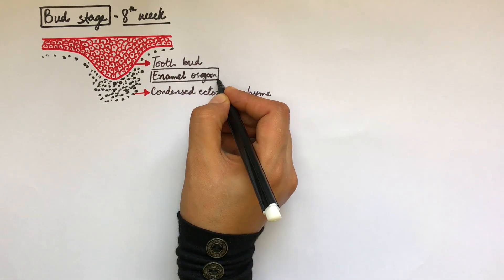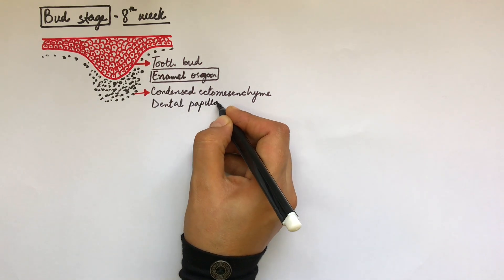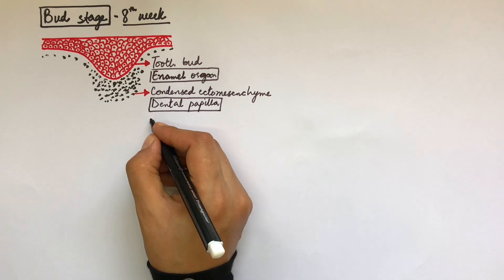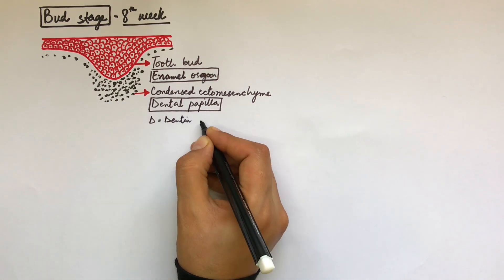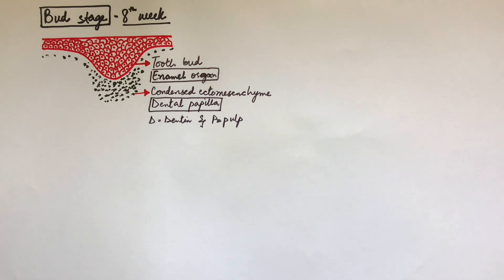Here at this stage, the namings are changed. The tooth bud here is now called the enamel organ because it will give rise to the enamel of the tooth, and the condensed ectomesenchyme is called the dental papilla. It will give rise to the future dentin and pulp of the tooth. The dental lamina is short and close to the oral epithelium at this stage.